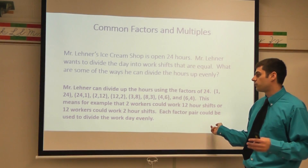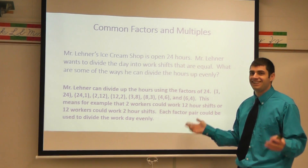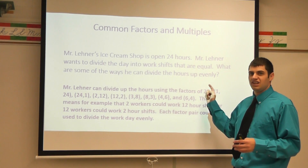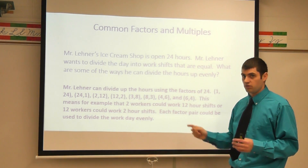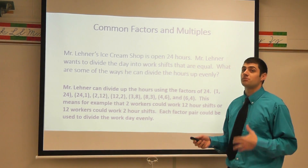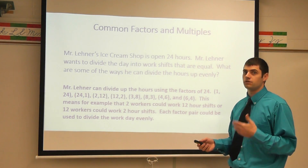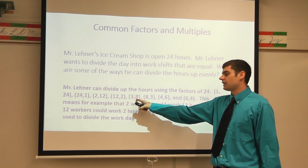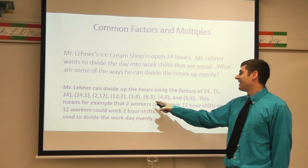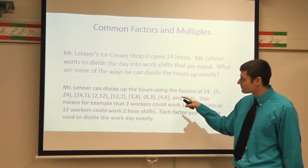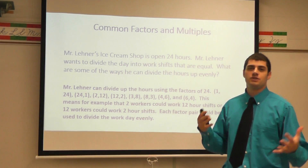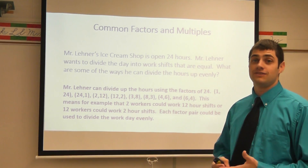Or I can have 12 workers each working two-hour shifts, which still equals 24 and divides my day equally. For each factor pair, it can be used to divide up the day evenly. Now, the one thing I probably don't want to do is have one worker working 24 hours straight — I know I wouldn't want to do that. But three workers working eight hours, eight workers working three hours, four workers working six hours, and six workers working four hours — I'm using my factor pairs to figure out how to set up hours evenly.